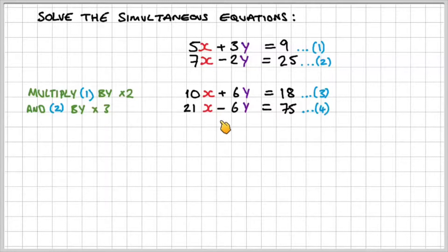So think about this. If we had to subtract the two equations, we would get 6 minus negative 6, which will give us 12. So what we're going to do is we're going to add equation 3 and equation 4 to eliminate the y.